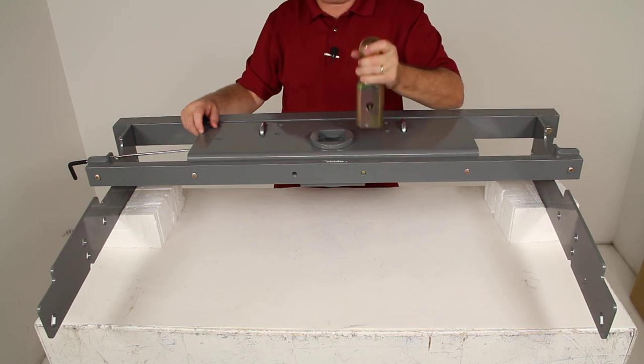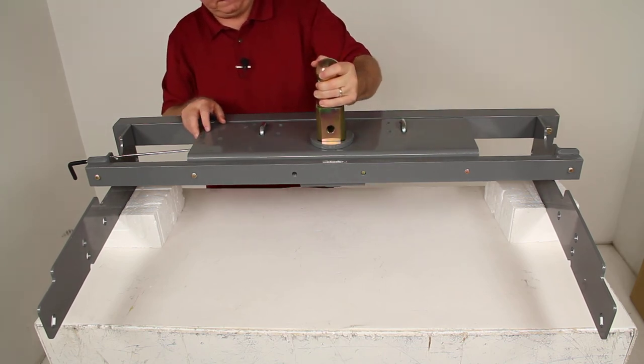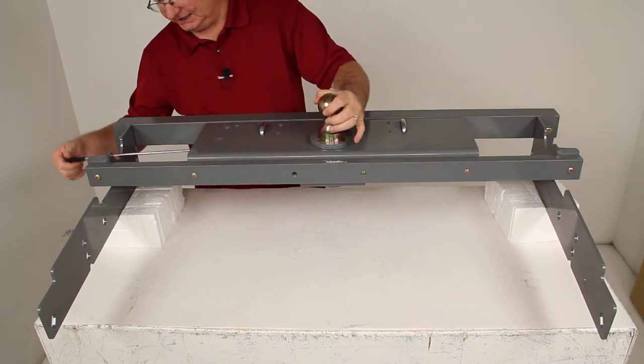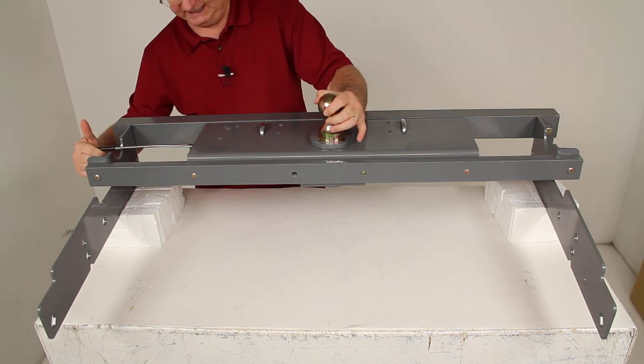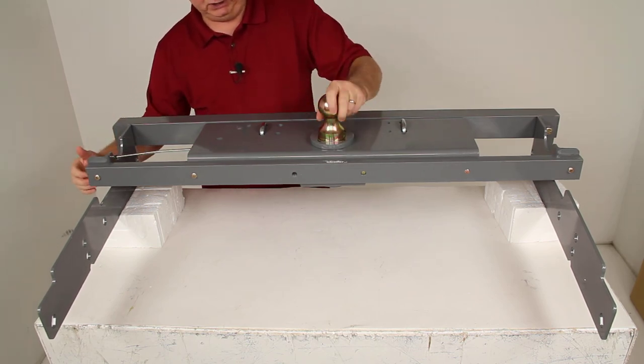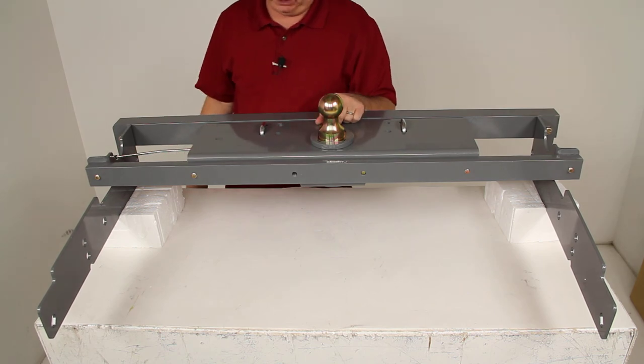And again just to show you, if you need to tow with it, drop the ball into place. Just twist the handle and that will release it. The pin will lock it into place. You're ready to tow with the gooseneck.